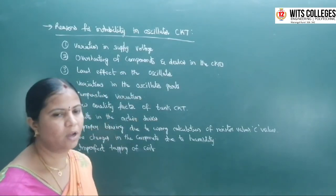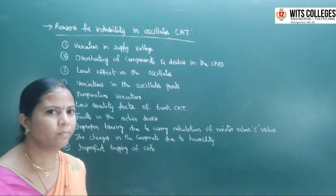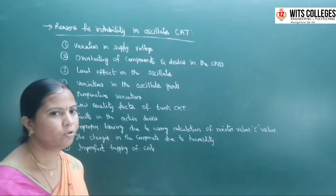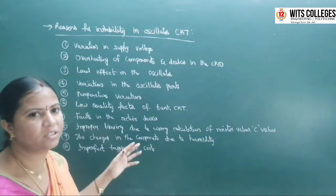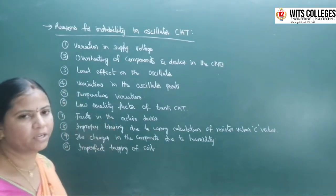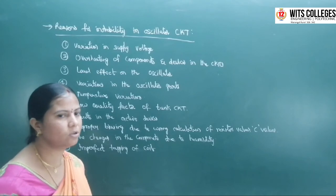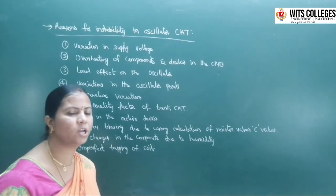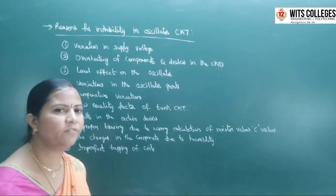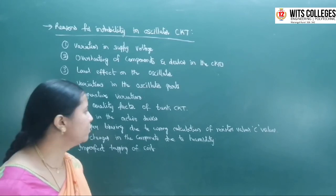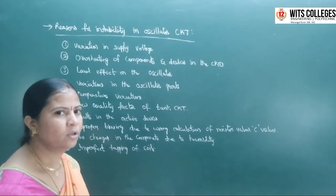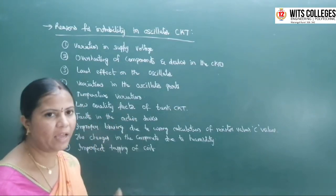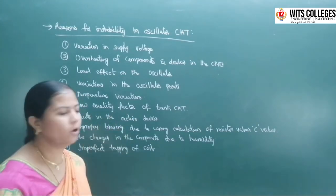Variations in the oscillator parts — oscillator parts include the tank circuit, CE transistor amplifier, and power supplies. If there are any variations in these oscillating parts, there is instability. Temperature variations also cause instability of oscillations. Low quality factor of the tank circuit is another reason — if you use LC tank circuits the quality factor is very low, and due to this low quality factor there is instability of oscillations.